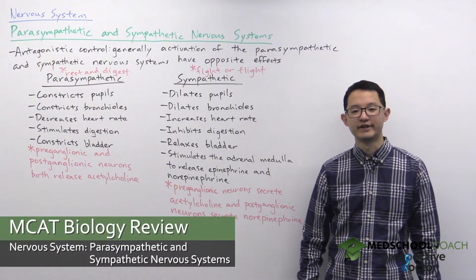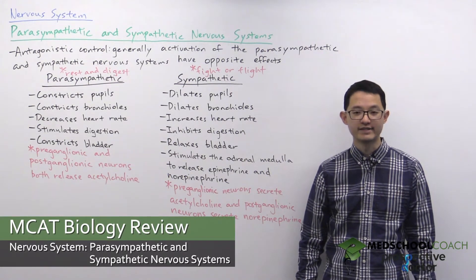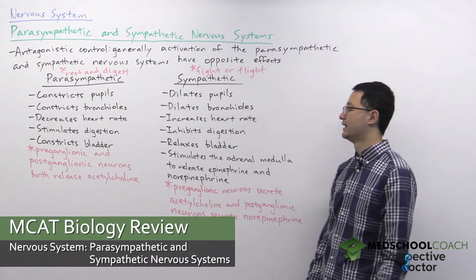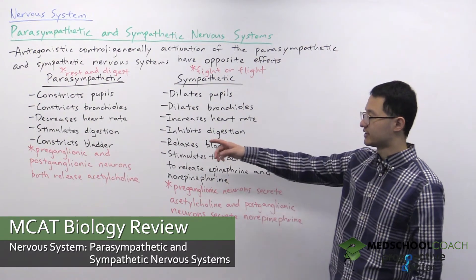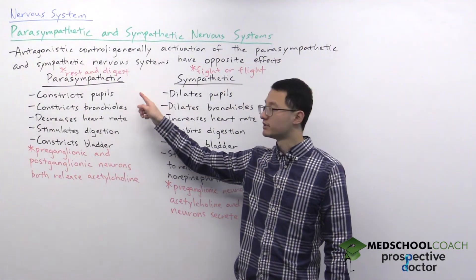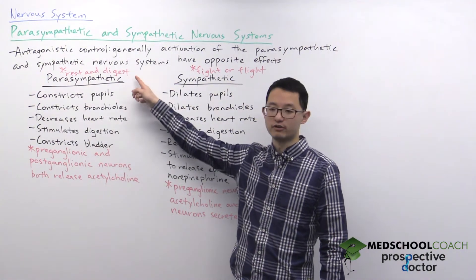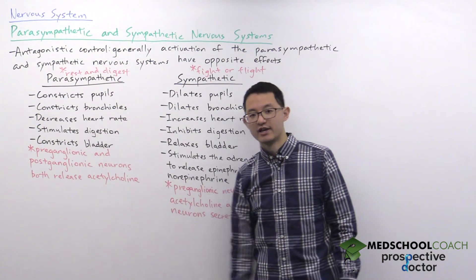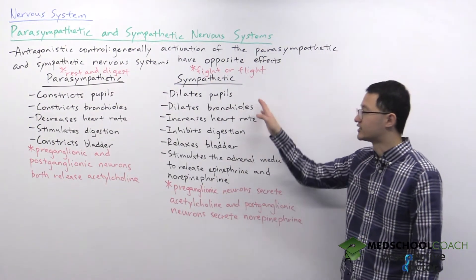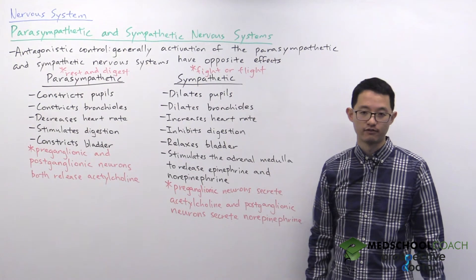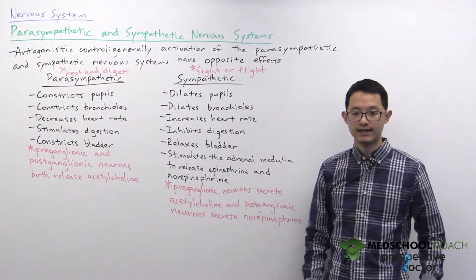In this video we're going to go over the parasympathetic and sympathetic nervous systems. Activation of the parasympathetic nervous system produces what we call the rest and digest response, whereas activation of the sympathetic nervous system results in the fight-or-flight response.